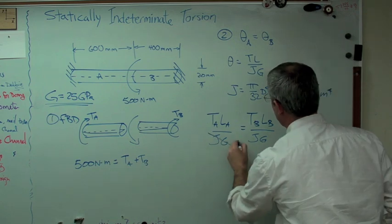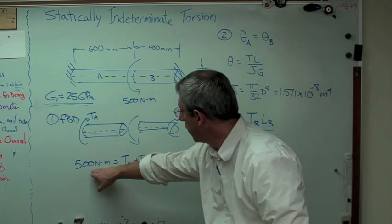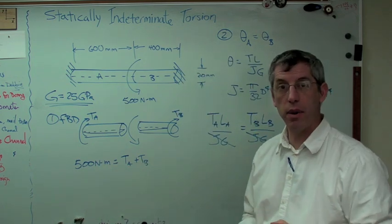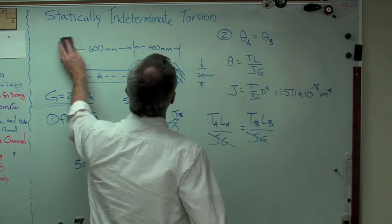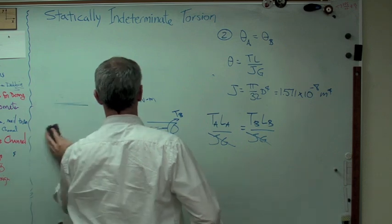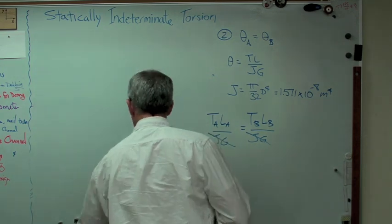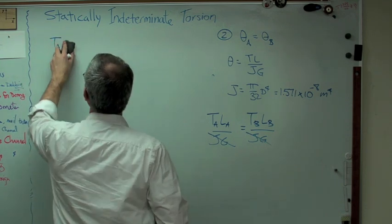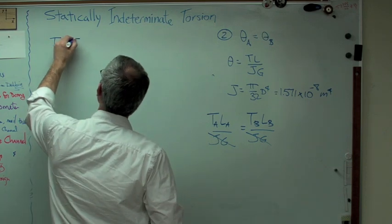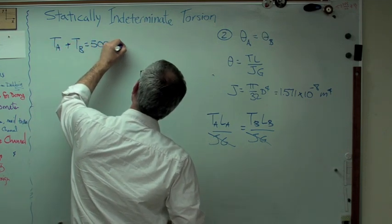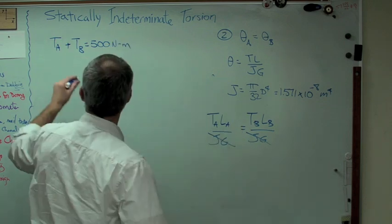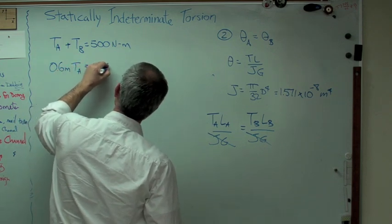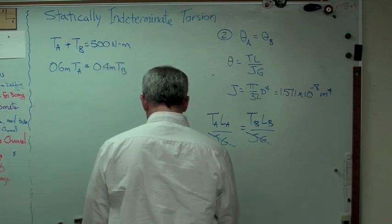So what I've got now is I've got two equations. There's one, and there's the other one. Two equations, two unknowns. Now I can solve the problem. So I'm going to erase some stuff on my little board here, and we'll go through the last little bit of mathematics. So let's write equation one is TA plus TB equals 500 Newton meters. And this one, now I'm going to put the lengths in here, too. So 0.6 meters times TA equals 0.4 meters times TB. Two equations, two unknowns.